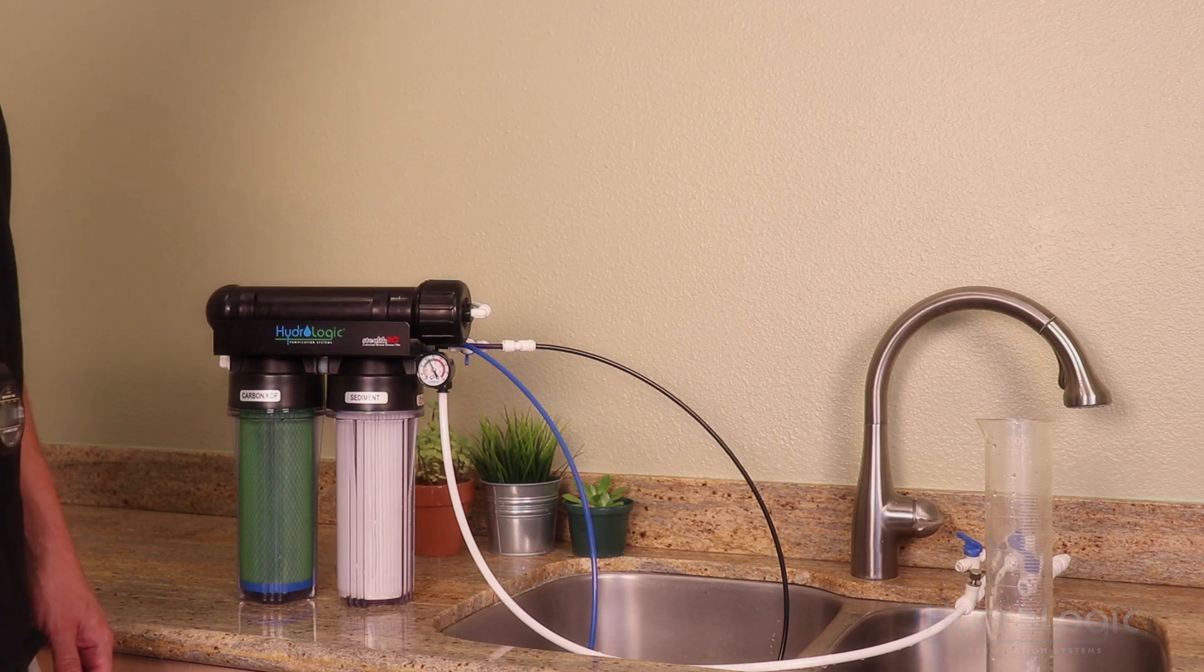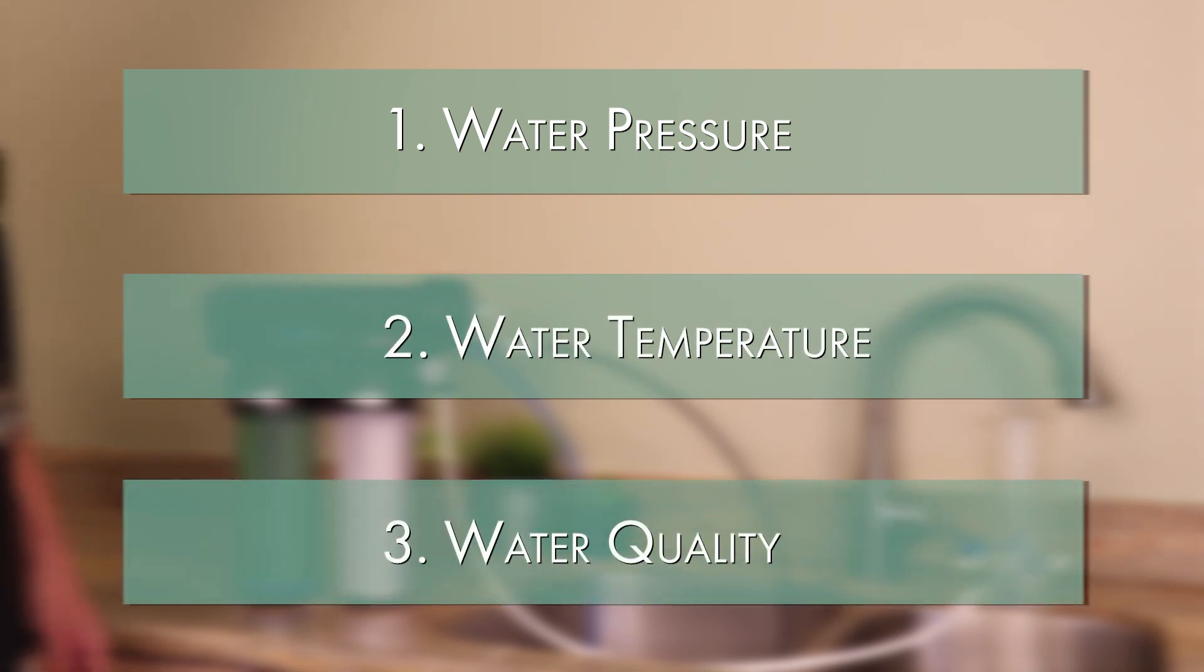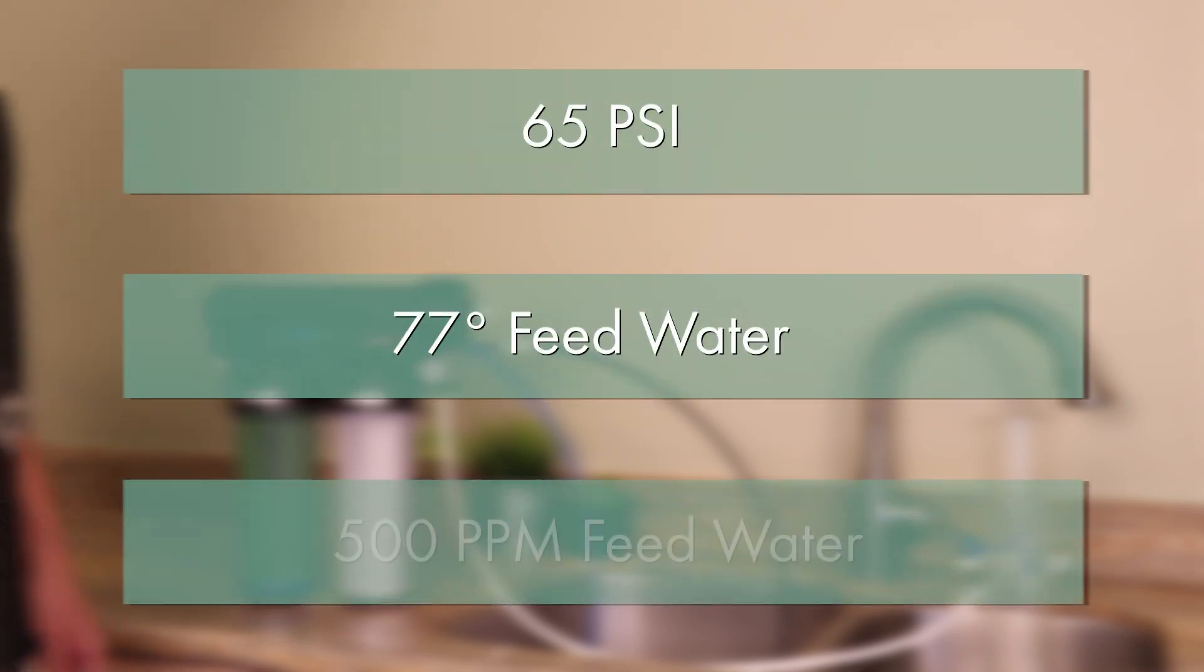Your flow rate is based on three variables: water pressure, water temperature, and water quality. There's an industry standard for measuring the flow rate of membranes: 65 PSI, 77 degree feed water, and 500 PPM feed water.